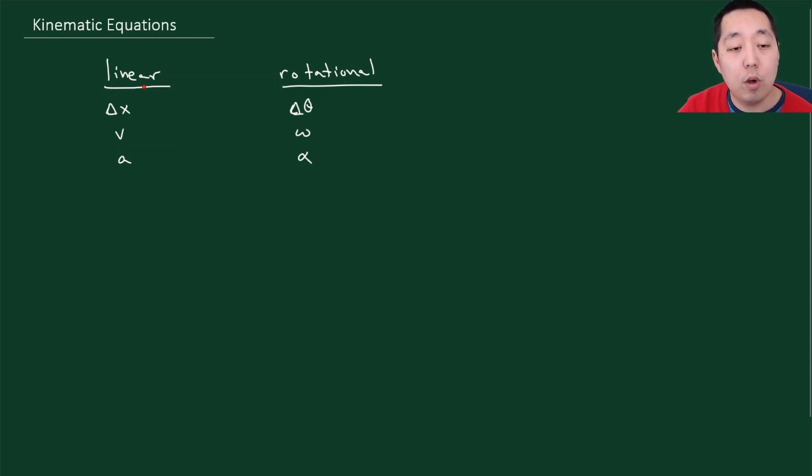In linear motion, let's list out all the kinematic equations we typically use. We have v final is equal to v0 plus at. We have the change in position is equal to v0t plus 1 half at squared. We also have vf squared, the equation that doesn't have time in it, v0 squared plus 2a delta x.